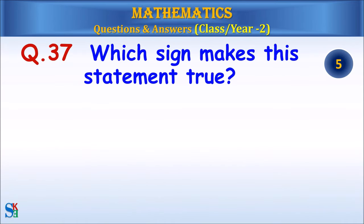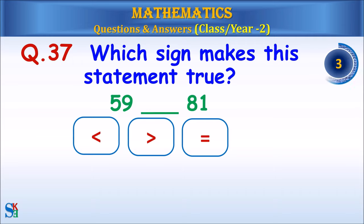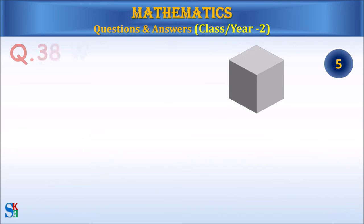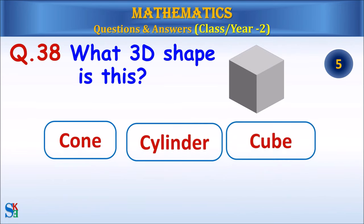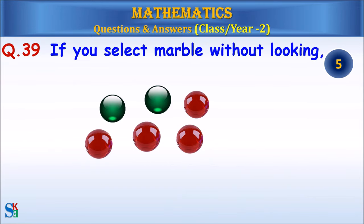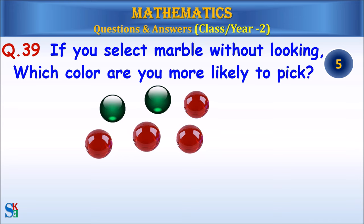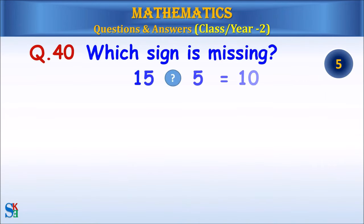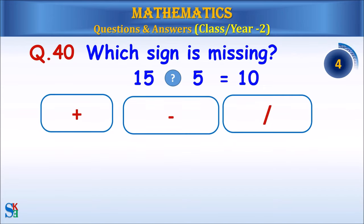Question 37: Which sign makes the statement true? Question 38: Which sign makes the statement true? Question 39: If you select a marble without looking, which color are you more likely to pick? Question 40: Which sign is missing? Answer: Minus sign.